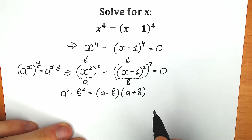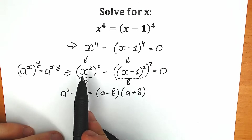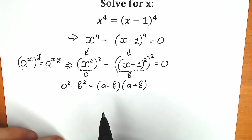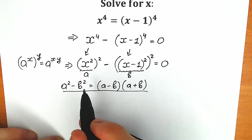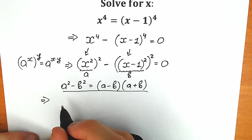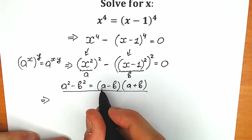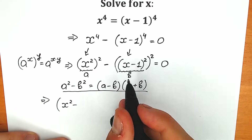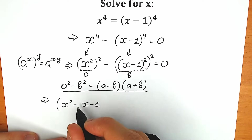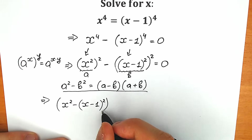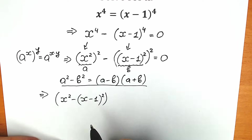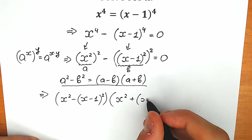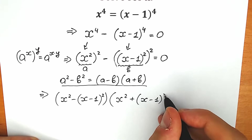This equals a minus b times a plus b. Let's apply this formula to our question. x squared is our a, and x minus 1 to the second power is our b. Applying the formula, our first factor is x squared minus x minus 1 to the second power, and our second factor is x squared plus x minus 1 to the second power.